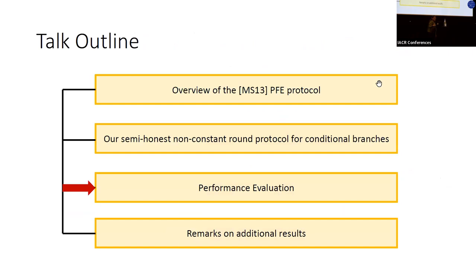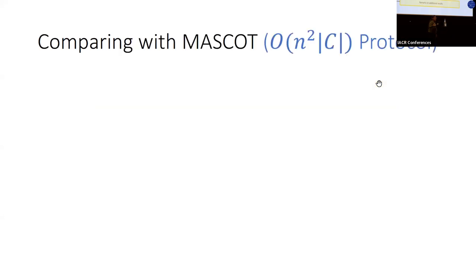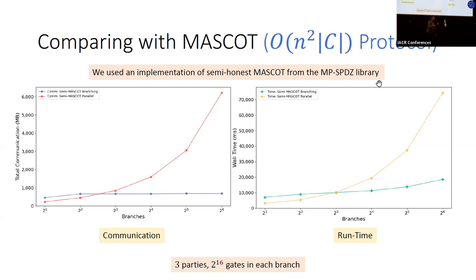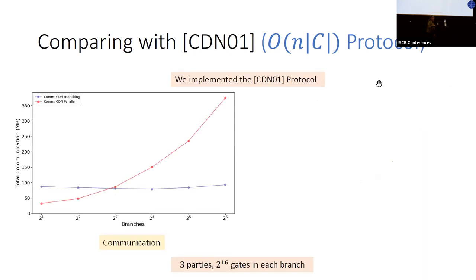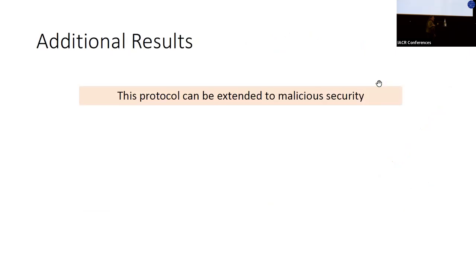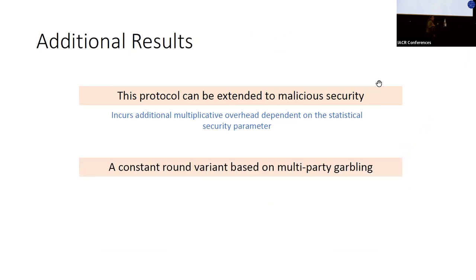We compare our protocol to naively computing conditional branches using state-of-the-art MPC protocols. Compared to MASCOT — a dishonest majority protocol with quadratic dependence on number of parties — the communication complexity in our protocol remains consistent as the number of branches increases, and runtime grows at a much lower rate. We do a similar comparison with CDN, a dishonest majority protocol with linear dependence on number of parties. We also show the protocol extends to the malicious setting and give a constant-round variant by relying on a multi-party garbling approach.